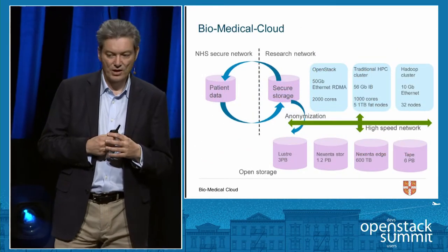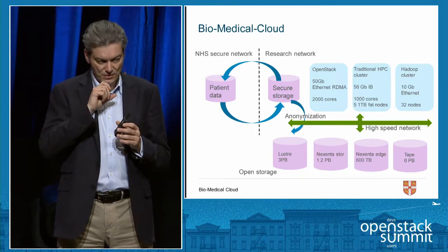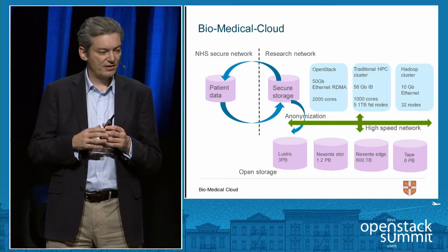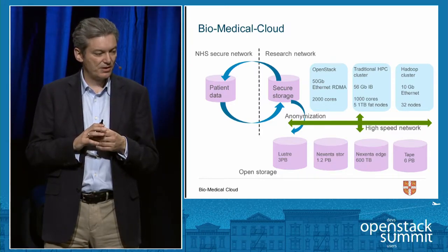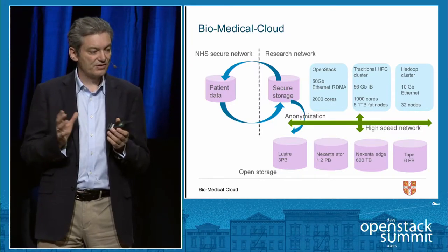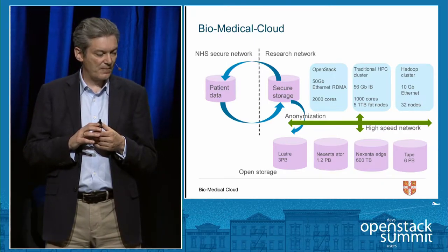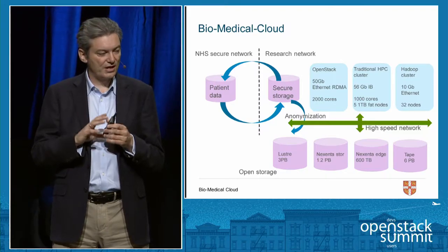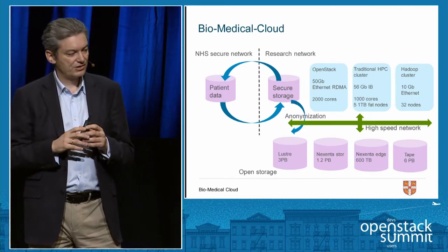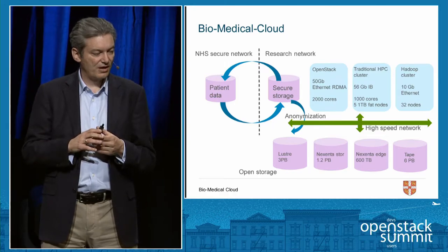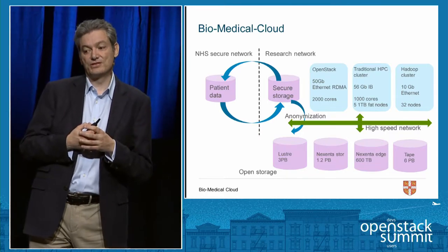If we take a look at the Biomedical Cloud, we can see that it's a heterogeneous architecture with three main elements. There's a 2,000 core OpenStack element using 50 gigabit ethernet that's RDMA enabled for performance. We have a traditional HPC cluster static image-based system using 56 gigabit infiniband — that's 1,000 cores — and we have currently quite a small Hadoop cluster which will be growing at the beginning of next year. There's also a complex ethical sign-off and data sharing platform that takes data from the hospital network and moves it across to the research network under the correct regulatory compliance regimes.